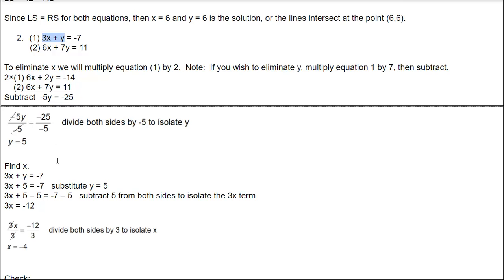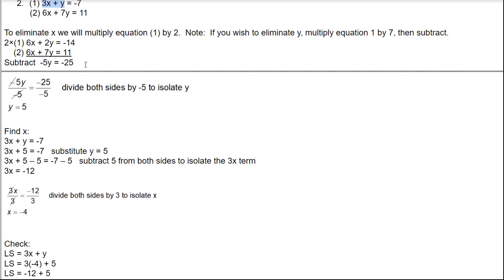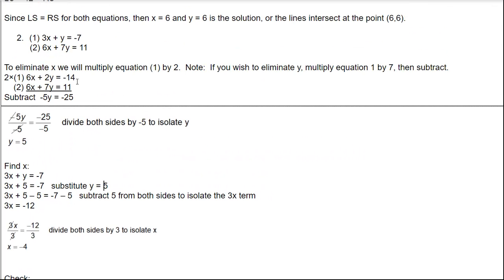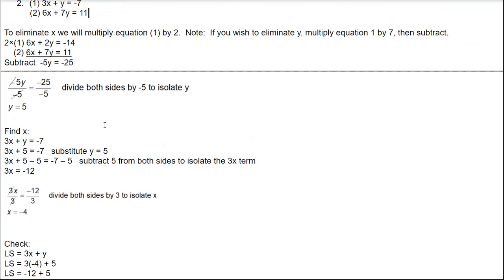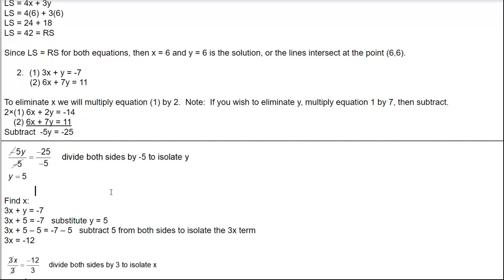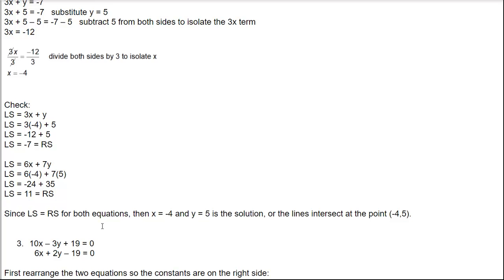We think x = negative 4 and y = 5, so let's check. In the first equation: 3 times negative 4 plus 5 is negative 12 plus 5 equals negative 7 — correct. In the second: 6 times negative 4 plus 7 times 5 is negative 24 plus 35 equals 11 — correct. Left and right sides match for both equations, so the lines intersect at the point (negative 4, 5).